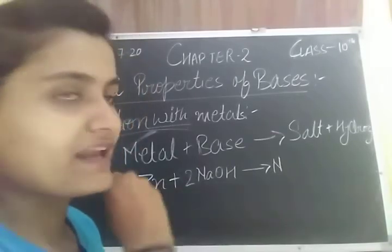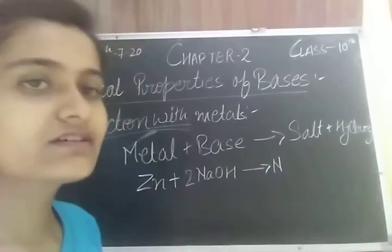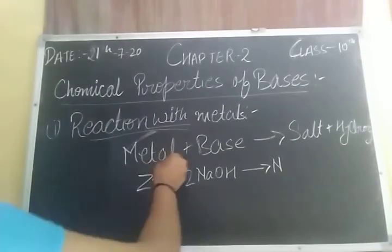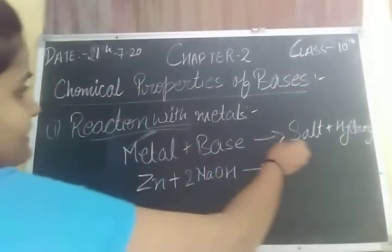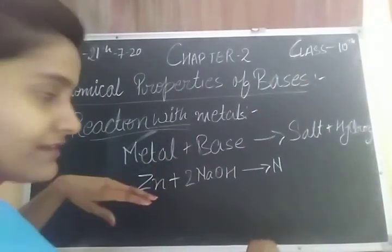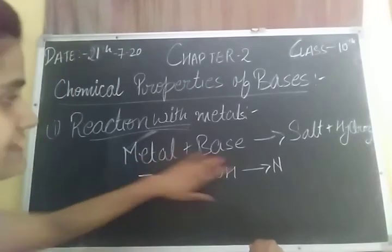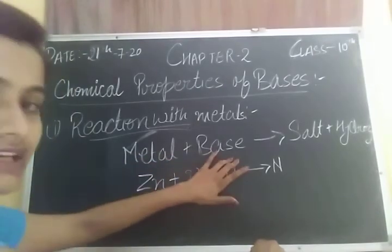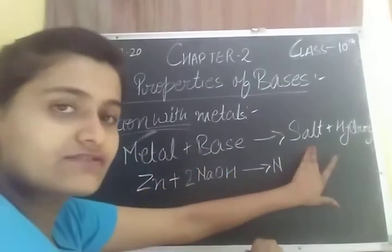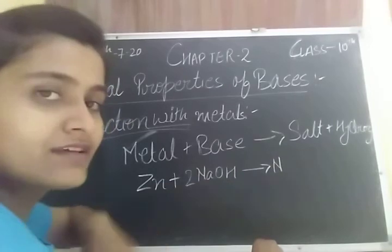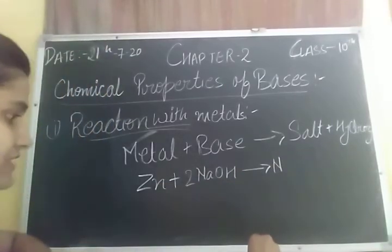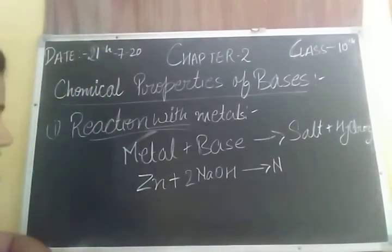First, let's look at the word equation: Metal + Base → Salt + Hydrogen gas. This means that when a metal reacts with a base, the products are salt and hydrogen gas.